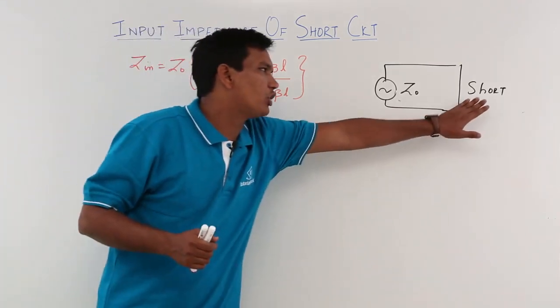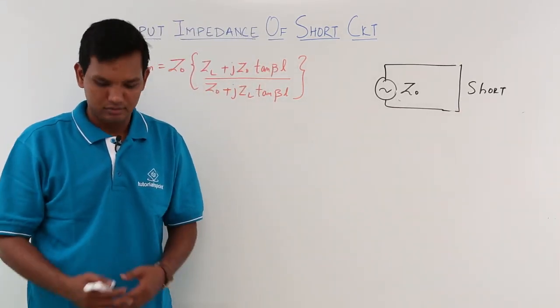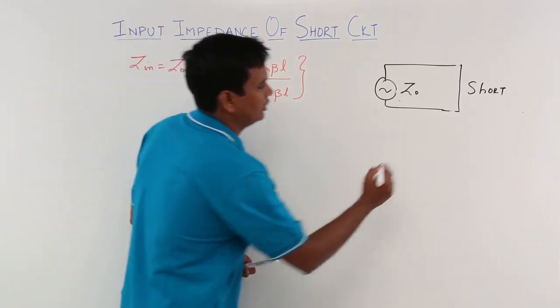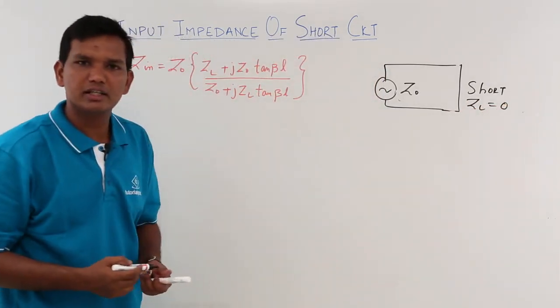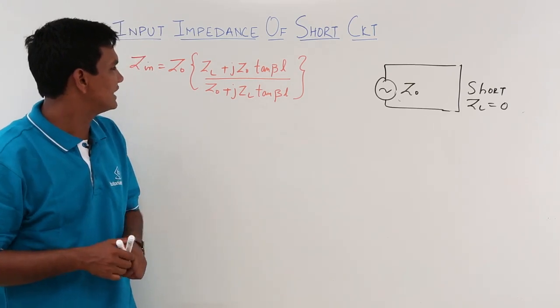If the circuit is short, what will be my load impedance ZL? My load impedance ZL will be nothing but zero. For a short circuit, what is the impedance? It means my ZL is zero.